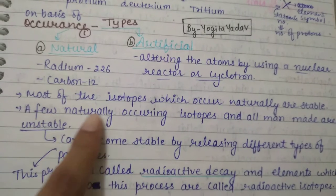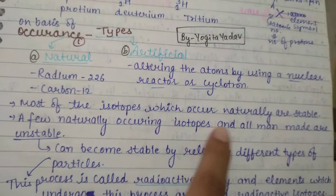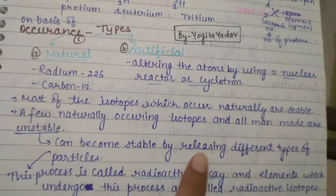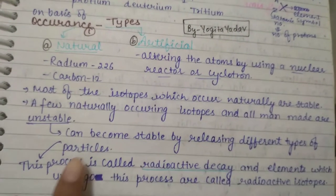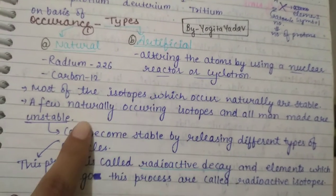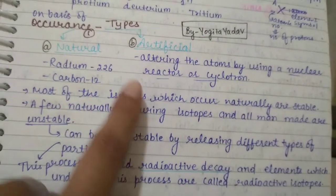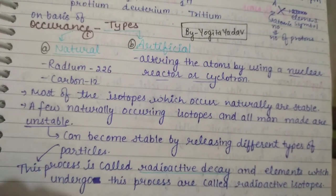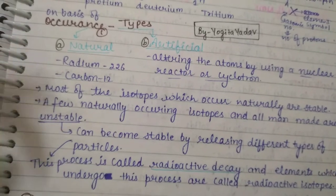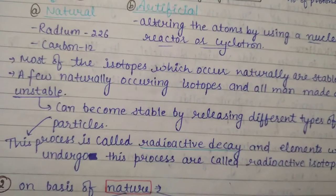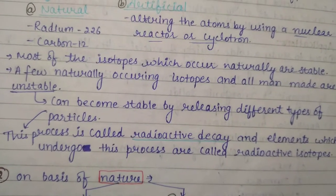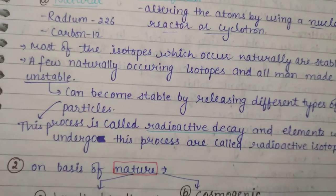A few naturally occurring isotopes and all man-made ones are unstable. Unstable isotopes can become stable by releasing different types of particles. This process is called radioactive decay, and the element undergoing this process is called a radioactive isotope.